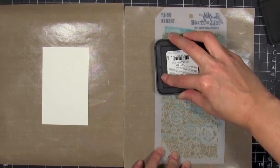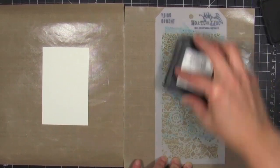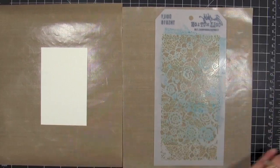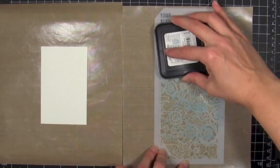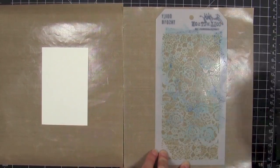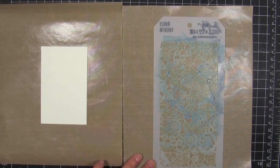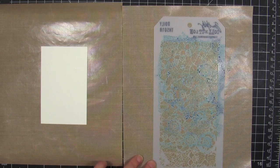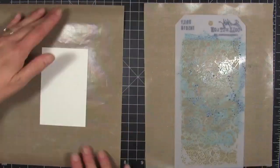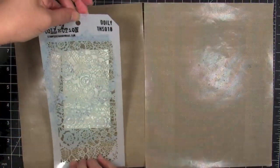I'm going to ink up the backside of the stencil with some Distress Ink. This is Broken China. And then for some added variation of color, I'm going to tap a little bit of Faded Jeans here and there. Then I'm going to spritz it with my water mister. You have to experiment to figure out how much water you want beading up on the back of the stencil, but we'll see how it turns out.